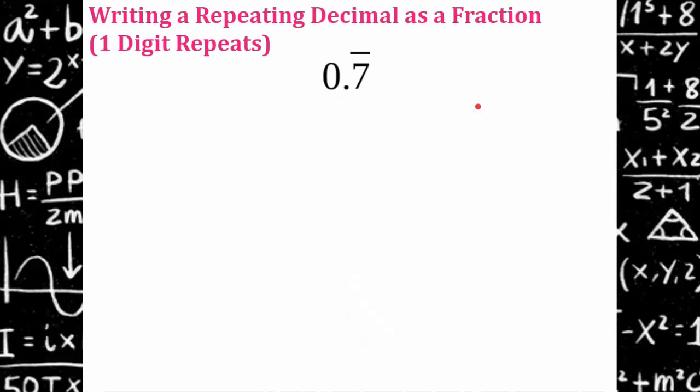So let's try this one, 0.7 repeating. That's not a commonly seen fraction. We end up with 1 third for a lot of things in math. But 0.7 repeating isn't something you're used to seeing. So let's see what happens when we convert this to a fraction using the algebraic process I just showed you. If you'd like to try it on your own, go ahead and hit pause. Come back and hit play when you're ready.